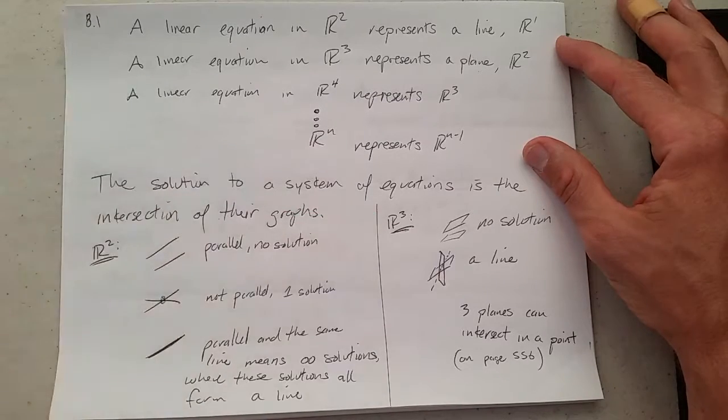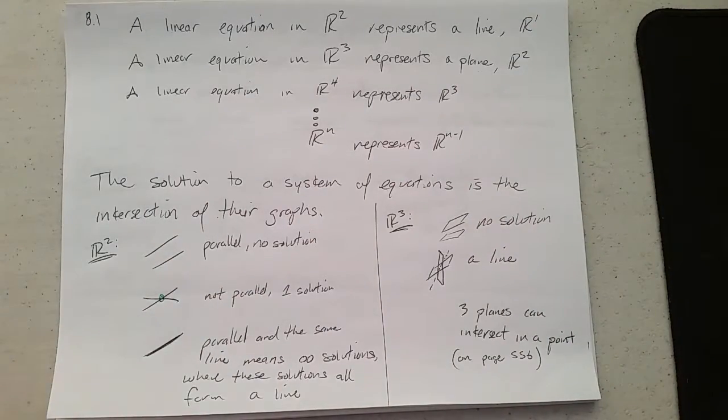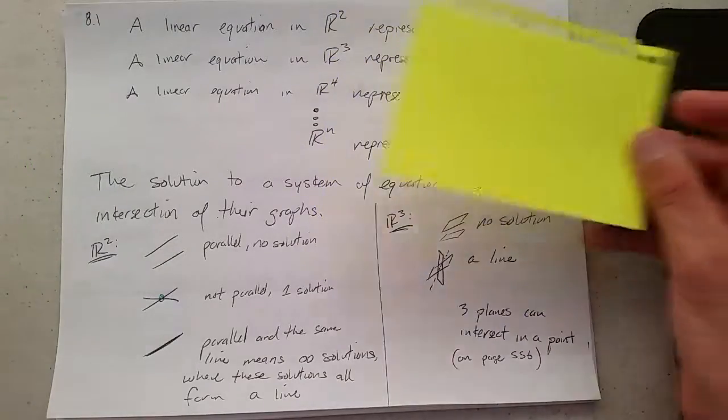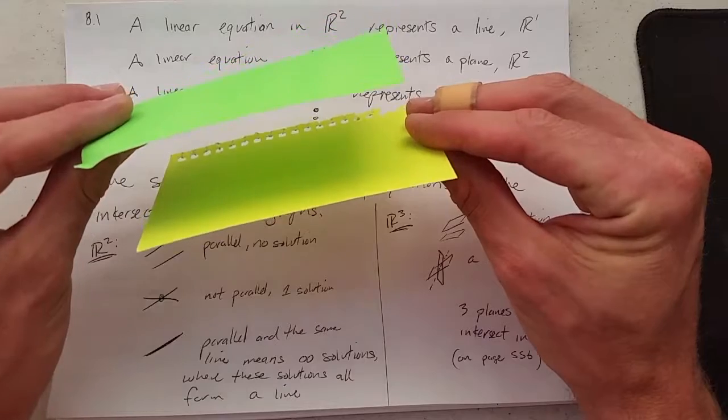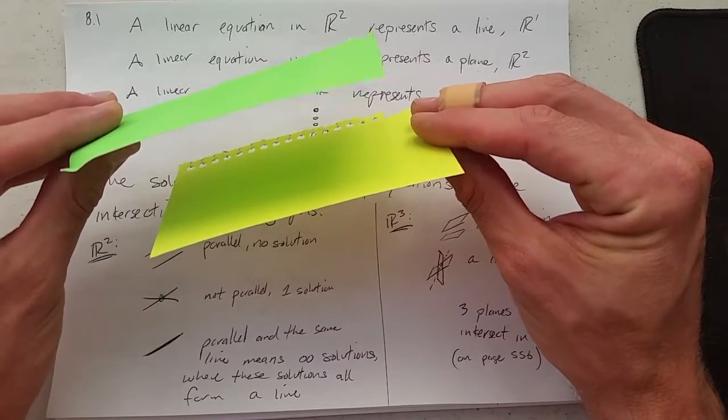If we go up another dimension, you could have parallel planes and have no solution. It's a little hard to do three dimensions on paper, so I will be using objects here. If you have parallel planes, they would not touch, so you could have two parallel planes and have no solutions.